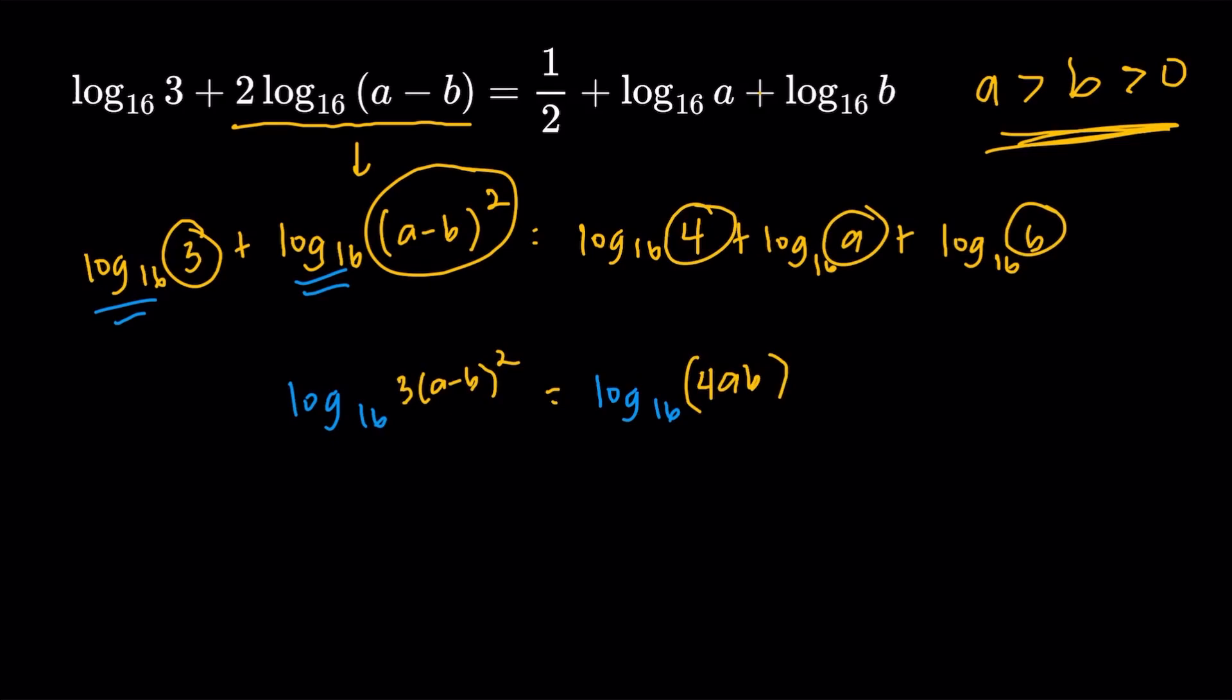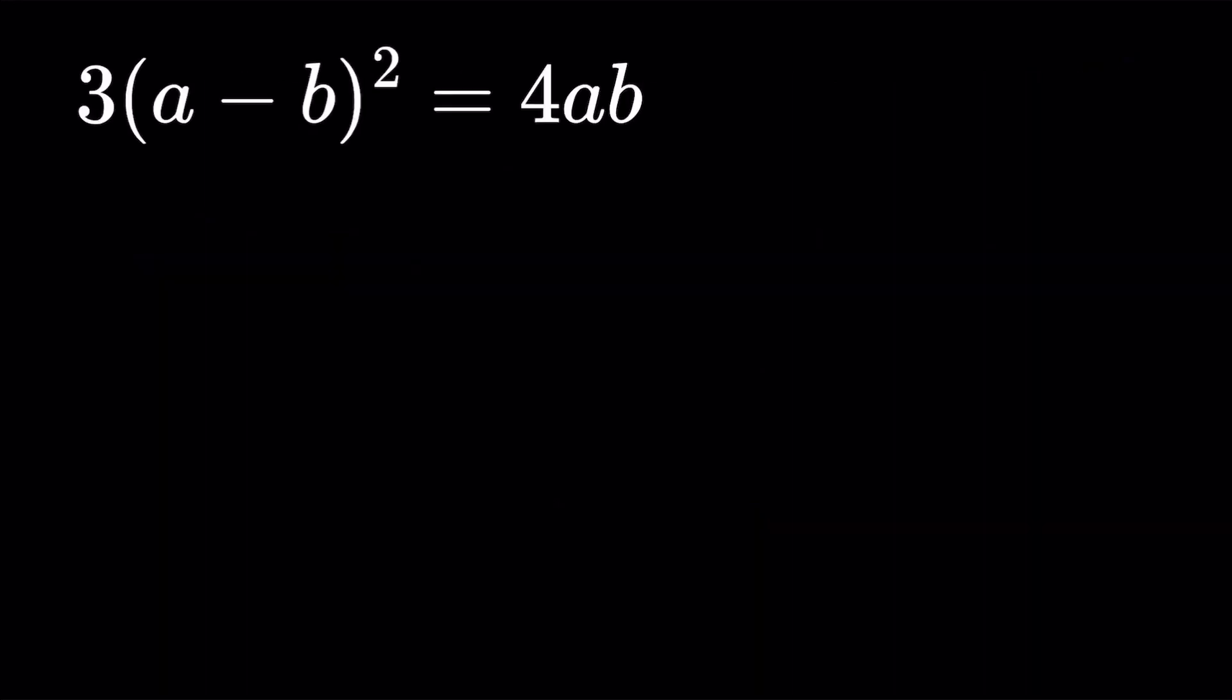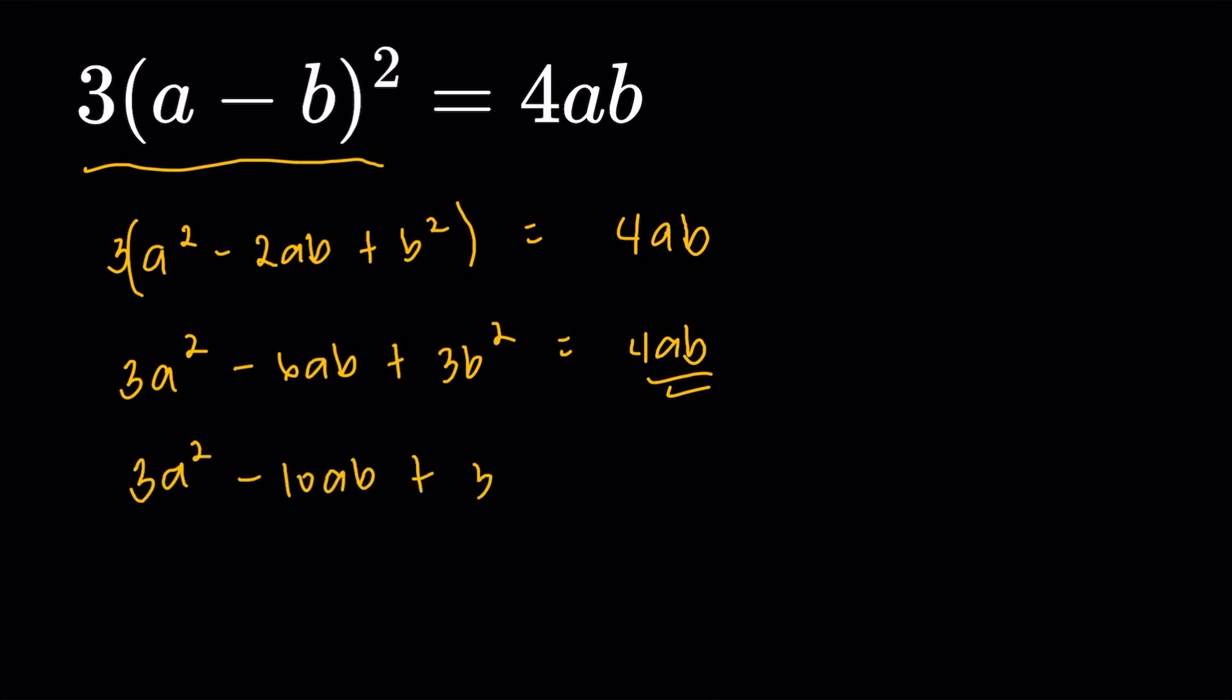Now, they do have the same base of 16. So we could just equate the 3 times the square of a minus b and the 4ab like so. So we just have to find the relationship between a and b in this part. Let's try to expand the left side. 3 times a squared minus 2ab plus b squared. That's equal to 4ab. 3a squared minus 6ab plus 3b squared equals 4ab. Let's put the 4ab to the other side.